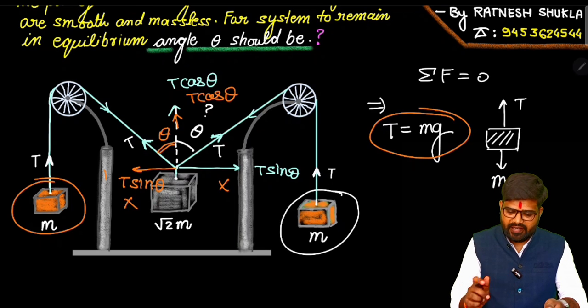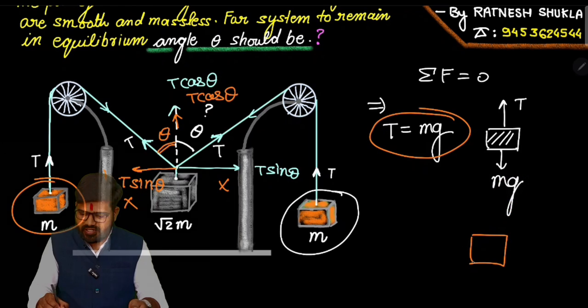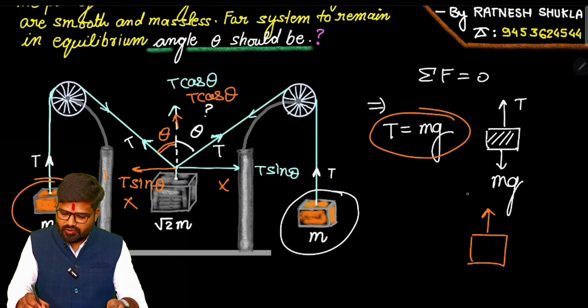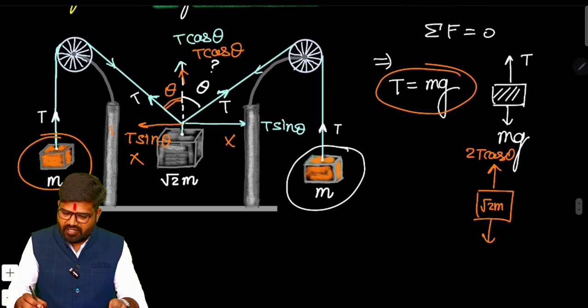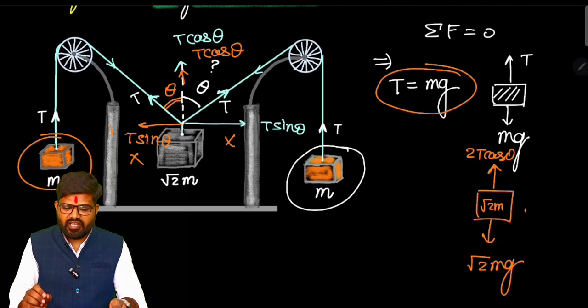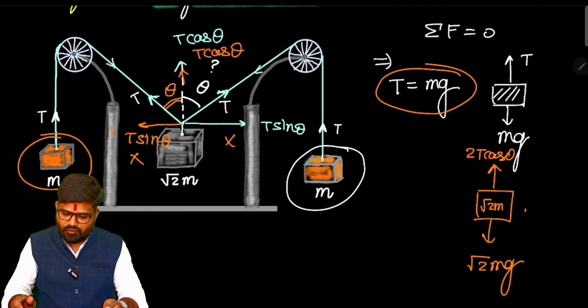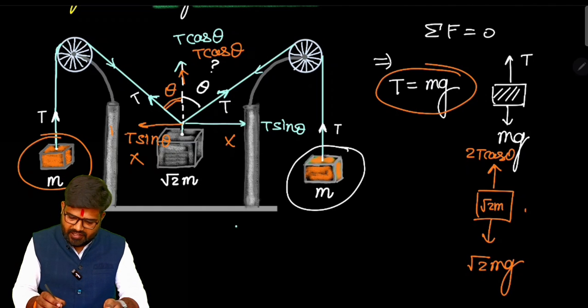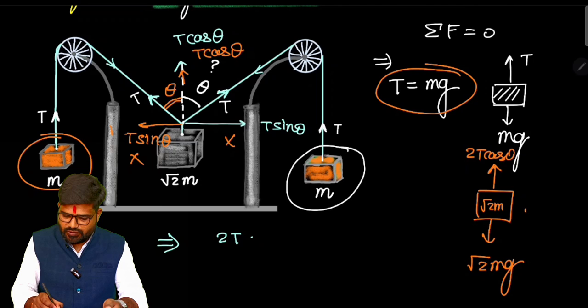Now if we see in vertical direction on this block, only two forces are acting which are 2T cos theta, which is for the block of mass √2mg. And below its weight is acting √2mg. And it's in equilibrium means vertical forces are also canceling out.